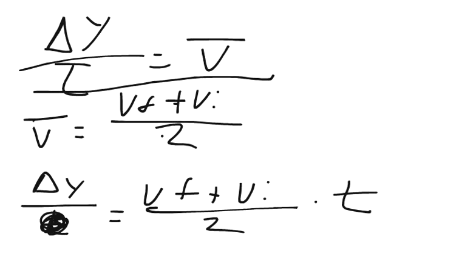And this is good most of the time. So your distance equals your average velocity times your time. The problem is usually you're not given the final velocity, you're given the acceleration.